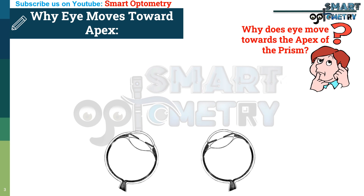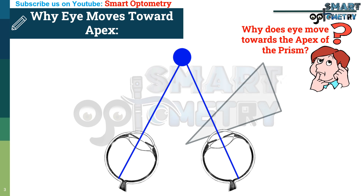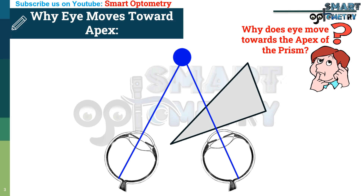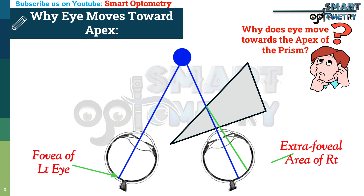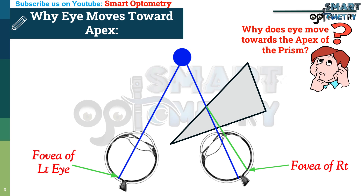Here in this figure, rays from an object are focusing on the fovea of both eyes. Now a base-out prism is introduced in front of the right eye. Due to its optical property, it will bend the rays towards the base, so the rays will be focused somewhere off the fovea. If rays from that object focus on the fovea of the left eye and an extrafoveal area of the right eye, then diplopia will be produced. To avoid diplopia, the eye must rotate inward or towards the nose so that the rays in the right eye can be focused on the fovea. This is why eyes always move towards the apex of the prism.